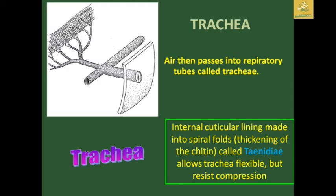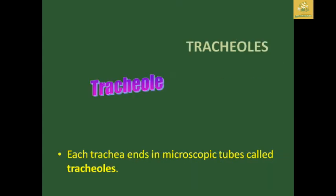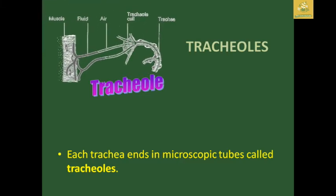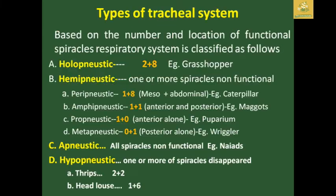The trachea acts as pipes used for the movement of air in the insect body. Each trachea ends up in microscopic tubules known as tracheoles. The tracheoles then form single small cells known as tracheole cells, where air and fluid from the muscles move within the body.